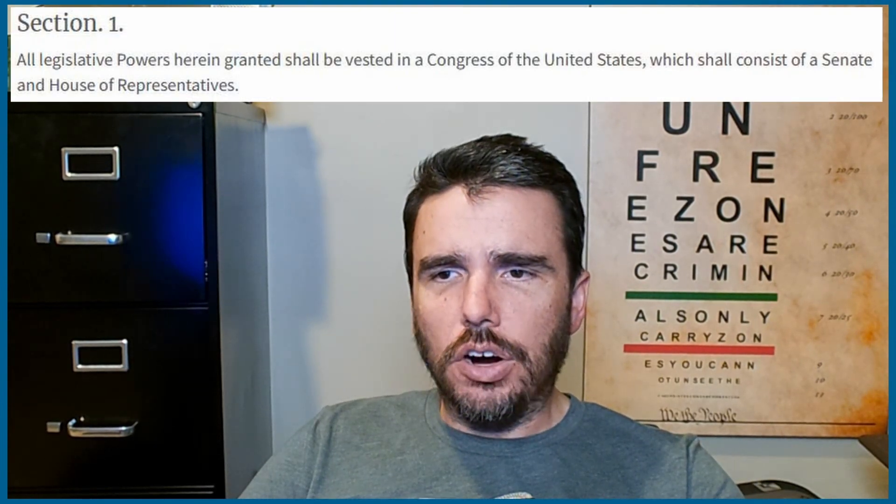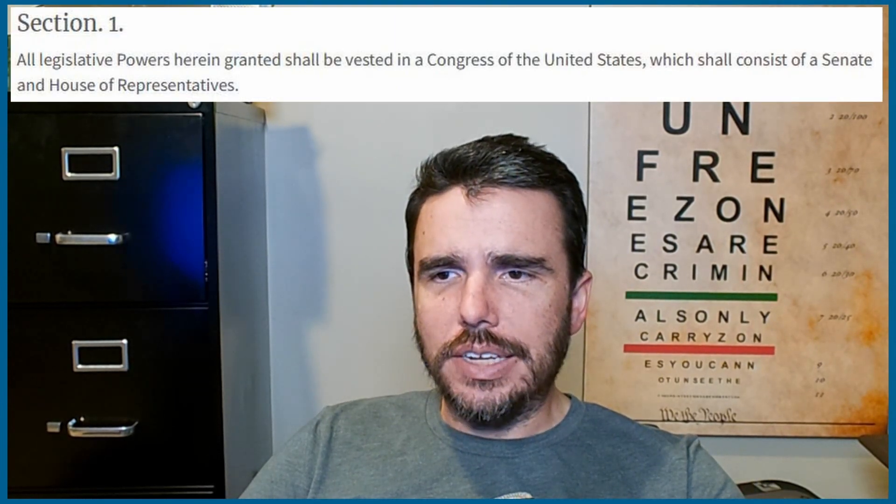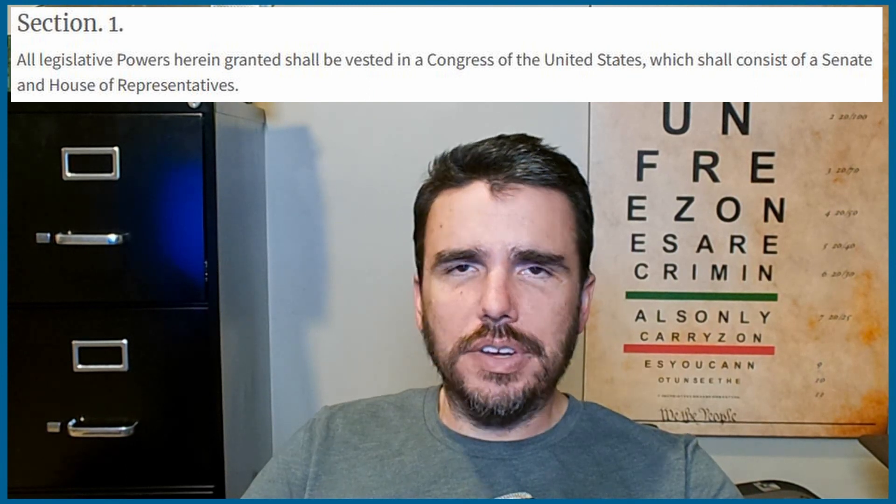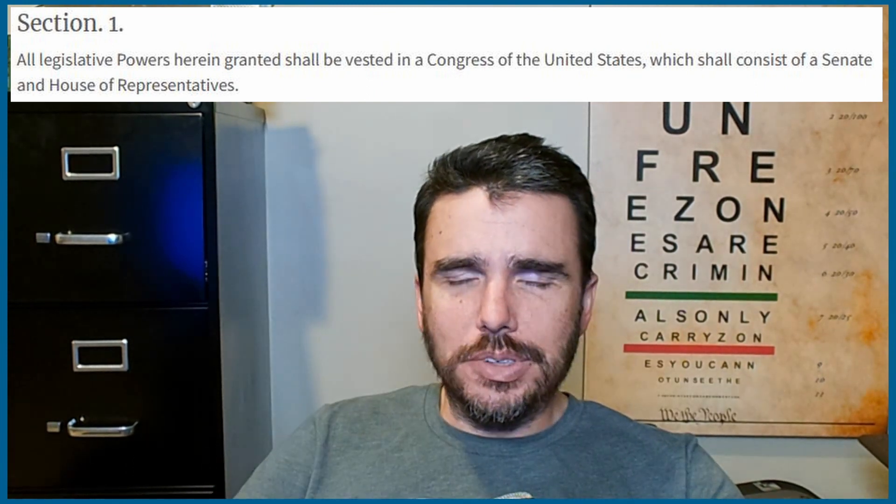Section One reads: 'All legislative powers herein granted shall be vested in a Congress of the United States, which shall consist of a Senate and a House of Representatives.' Right out of the gate, Article One, Section One clearly delineates that our legislative branch will be comprised of a Senate and a House of Representatives — pretty simple and cut-and-dry.